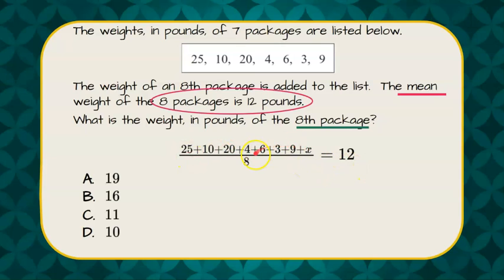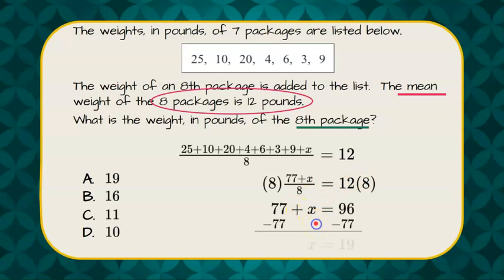Now let's combine our like terms, and that's going to give us 77 plus x. To solve for x, the first thing we're going to do is clear the denominator, multiplying both sides by 8, giving us 77 plus x equals 96. Subtract 77 from each side, and we get that the eighth package is 19 pounds.